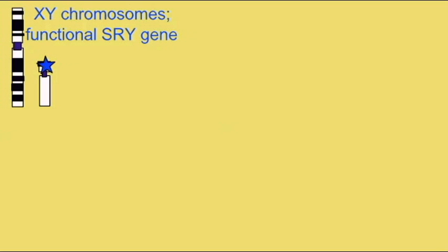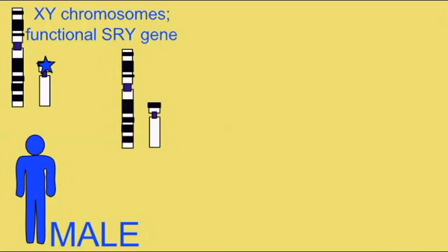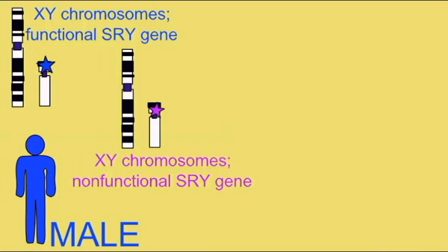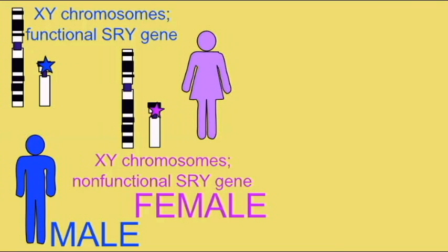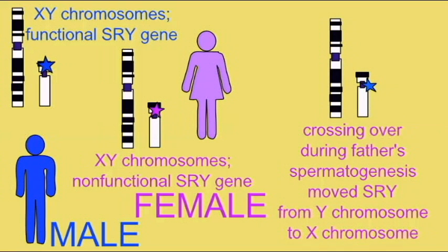Mutations which involve the SRY gene can result in sex reversal. XY individuals who have inherited mutations in the SRY gene may develop as females, so SRY mutations can cause XY sex reversal as individuals develop as females. Most of the mutations affect the DNA binding region of SRY, but a few mutations causing sex reversal are known in other regions outside the DNA binding region.